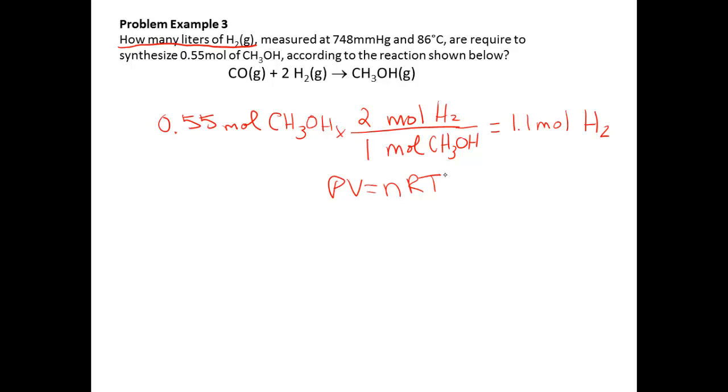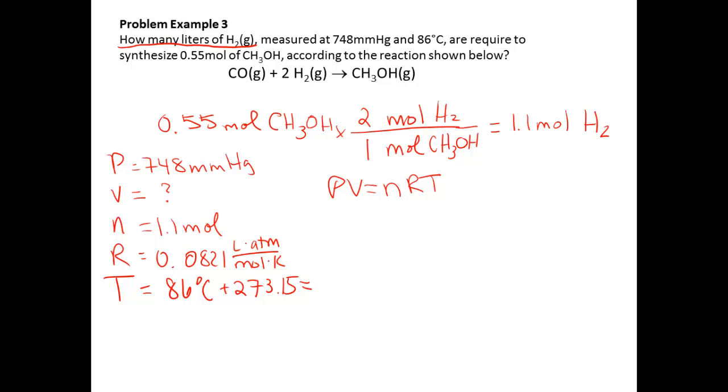To solve for V, let's take a look at all of our parameters as we're given. So our pressure is equal to 748 mmHg. Our volume, that's what we are solving for. We know that we have 1.1 moles, and our R is always equal to 0.0821 liter atmosphere over mole Kelvin. And our temperature is 86 degrees Celsius, which right away I'm going to add 273.15 to. However, since our temperature is only given to the ones, that 0.15 isn't going to play into this too much. And we calculate a temperature in Kelvin of 359 K.